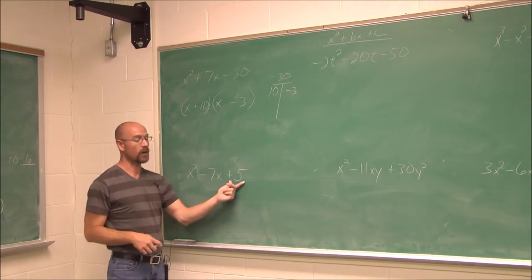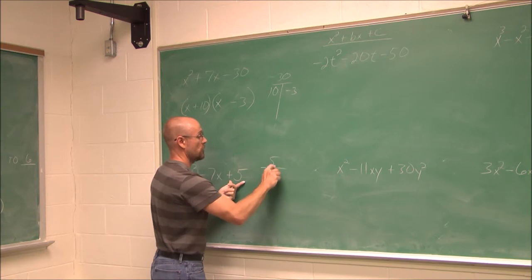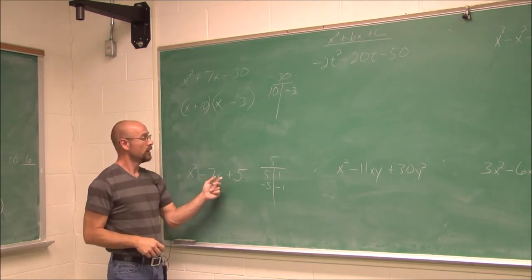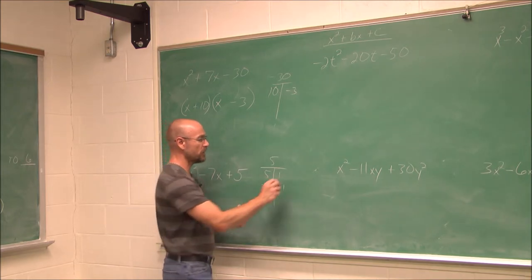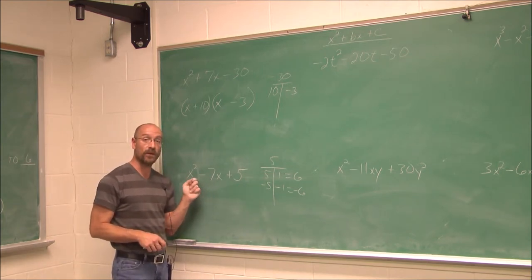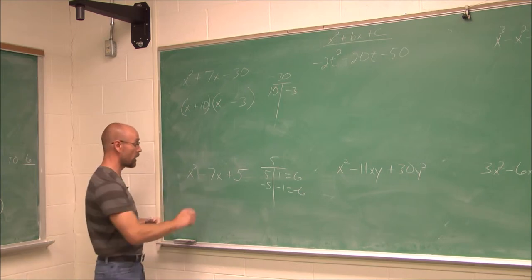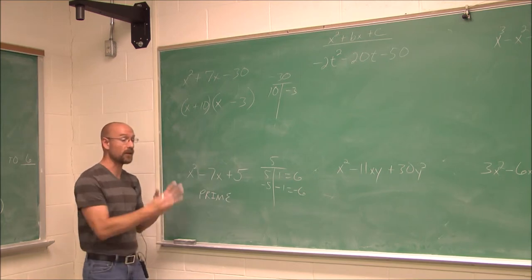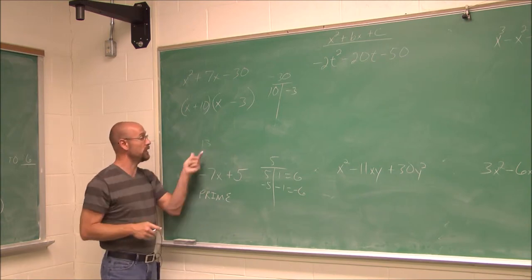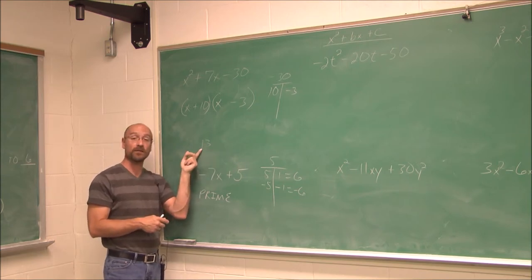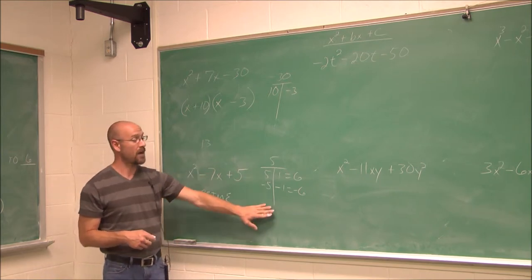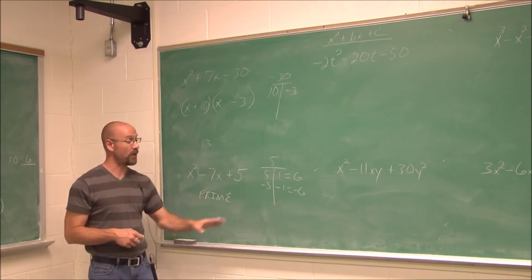For x squared minus 7x plus 5 — the factors of 5 are 5 and 1, or negative 5 and negative 1. Summing 5 and 1 gives 6; summing negative 5 and negative 1 gives negative 6. Neither value is negative 7. This is what we call a prime trinomial — we just write 'prime.' It does not factor; there are no binomial factors. This is similar to the number 13 — we can't break it down. Be aware this will happen.